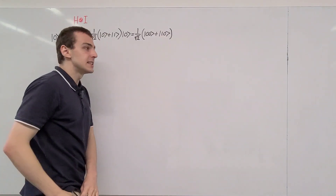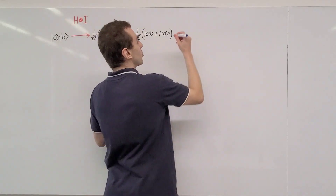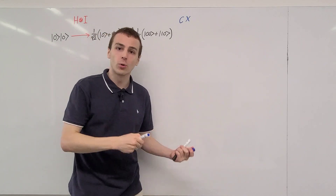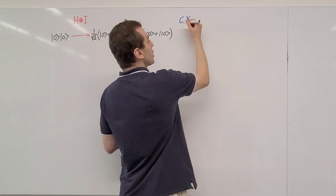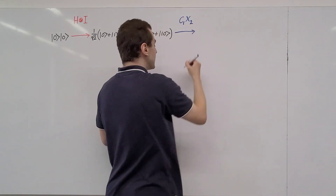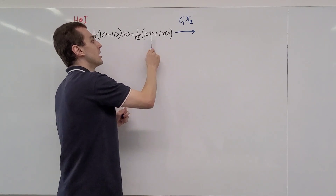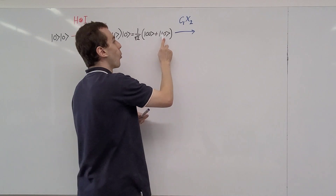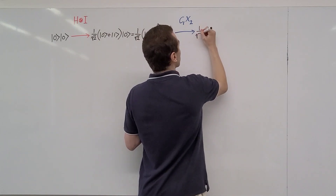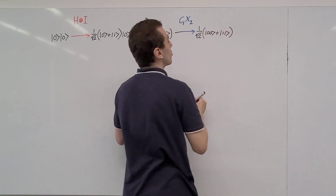The next thing we need to do is apply the controlled NOT gate, which can be denoted as CX. We can specify which qubit is the control and which is the target. In this case, the control qubit is qubit one and the target qubit is qubit two. The |00⟩ state is going to get mapped to |00⟩, so it will remain unchanged. But the |10⟩ state is going to get flipped to |11⟩, giving us 1/√2 times (|00⟩ + |11⟩).